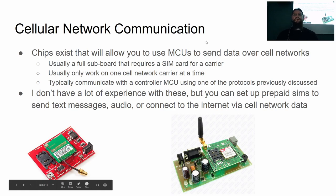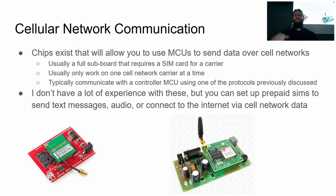The next one is cellular network communication. You can buy boards where you just stick a SIM card in and it will let you send texts, download internet data, and send audio phone calls over the cellular network. They pretty much only work if you have a valid SIM card for a carrier, so you'll need a prepaid SIM card, but it lets you interact with cell phone networks directly. So if you have a cabin in the woods and want it to call your phone whenever someone breaks in, this is one way to do that.